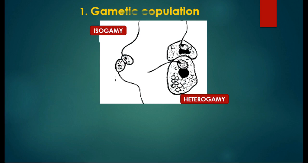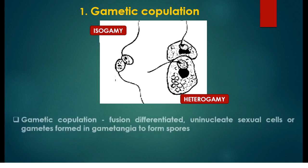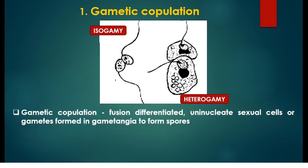The first method of sexual reproduction is gametic copulation. In gametic copulation, both the male and female gametangia produce well-defined sex cells called male and female gametes. There is fusion of well-differentiated uninucleate sex cells or gametes formed in the gametangia to form spores.